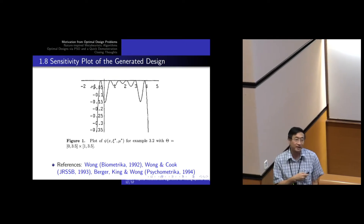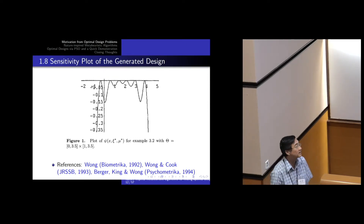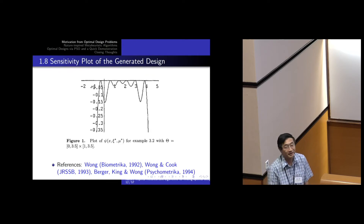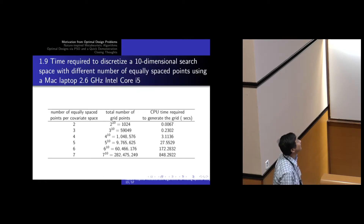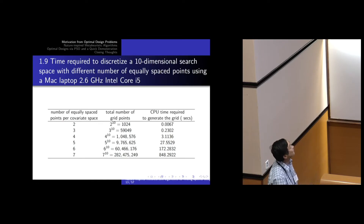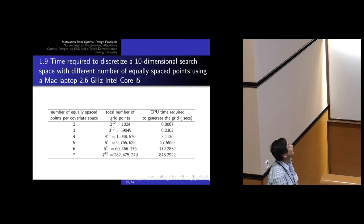This was the first problem I sent to computer scientists to test: if this algorithm is so good, can you find the optimal design for this? They implemented the algorithm and I was shocked — you can find it in literally a few seconds. That motivated the move toward nature-inspired meta-heuristic algorithms.